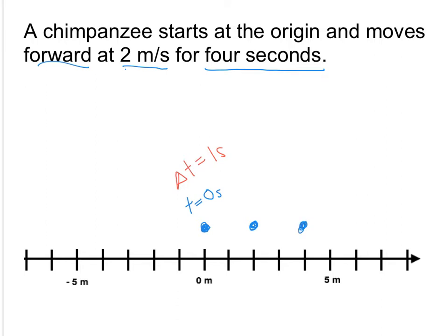So that's an interesting thing—a four-second motion map really does have five dots, because it has this initial zero second dot.